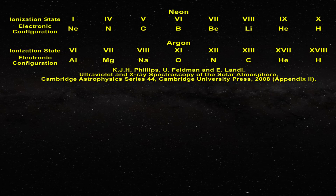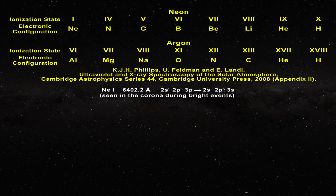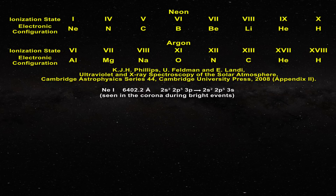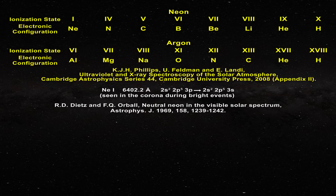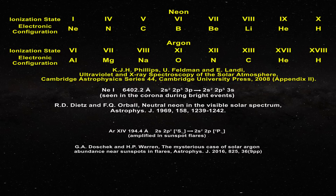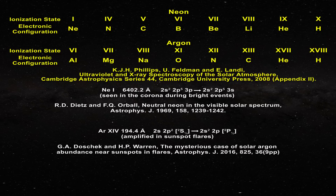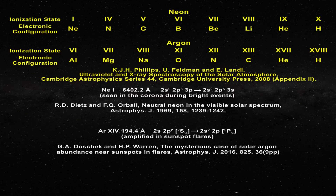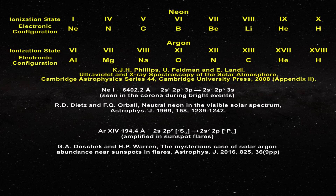It has been argued that the 6402.2 angstrom line from neutral neon can be seen in emission during bright events in the inner corona. Importantly, during a solar flare, lines from argon 14 appear to become greatly amplified. A 2s 2p2 doublet S 1.5 to 2s2 2p doublet P 1.5 transition at 194.4 angstroms occurs in this case, which is not spin-forbidden. That line, however, is not prominent on the disk in the quiet Sun, as can be gathered by examining appendix 2 in this text.